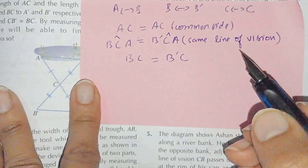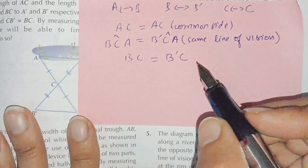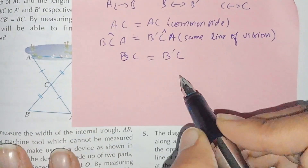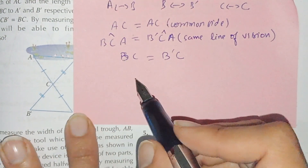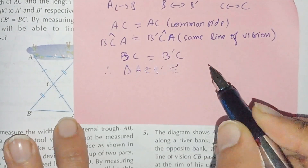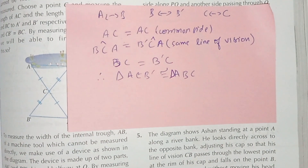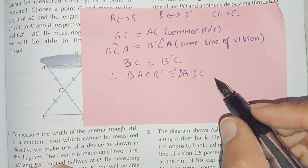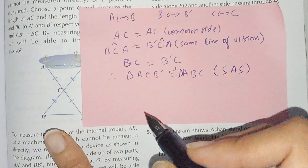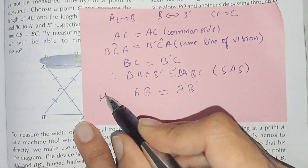BC is equal to B'C' — this is also given in the description, as he looks at the same point. Therefore triangle ACB' is congruent to triangle ACB by the Side-Angle-Side (SAS) test. Since both triangles are congruent, AB is equal to AB'.